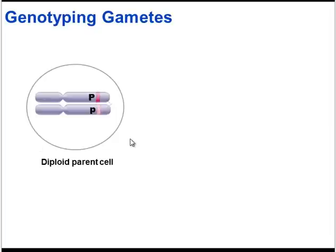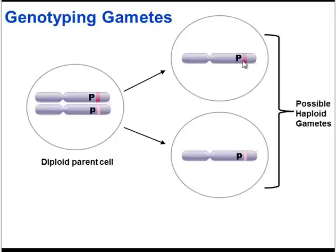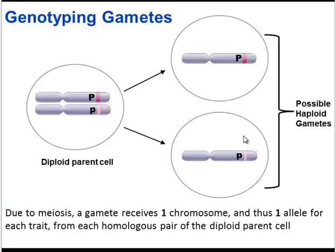Here is a cell from one of those parent plants. Within this cell, we see a homologous pair of chromosomes. Note there are many other homologous chromosomes in the cell, but we're focusing on this one pair because it has the genes for flower color. The genotype of this parent cell is uppercase P, lowercase p. If this cell were to divide by meiosis to make gametes, the gametes will have one of these two chromosomes — either a gamete with the dominant uppercase P, or a gamete with the lowercase recessive p allele.